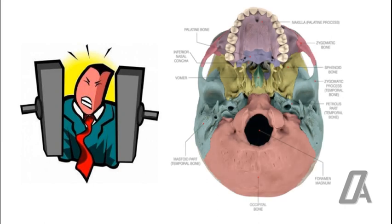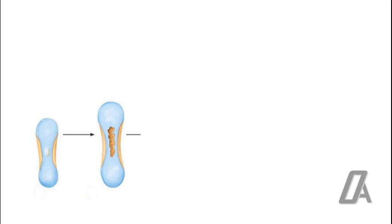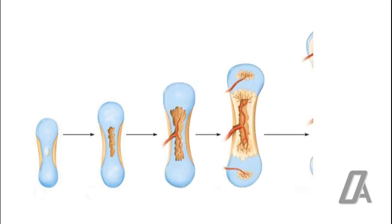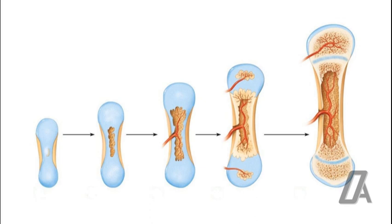Cartilage, unlike bone, is a pressure-adapted tissue and can grow in heavy pressure areas. The direction of growth is not unidirectional like bone; linear growth takes place allowing lengthening of bone. The entire process of endochondral ossification is continuous and repetitive, with one zone transferring into the next.